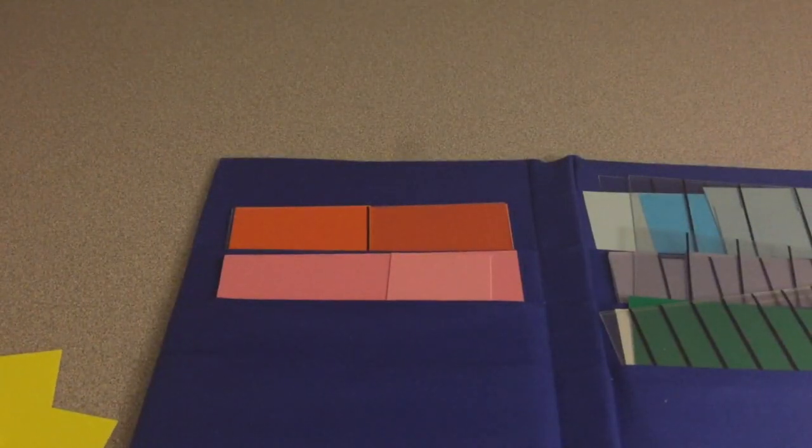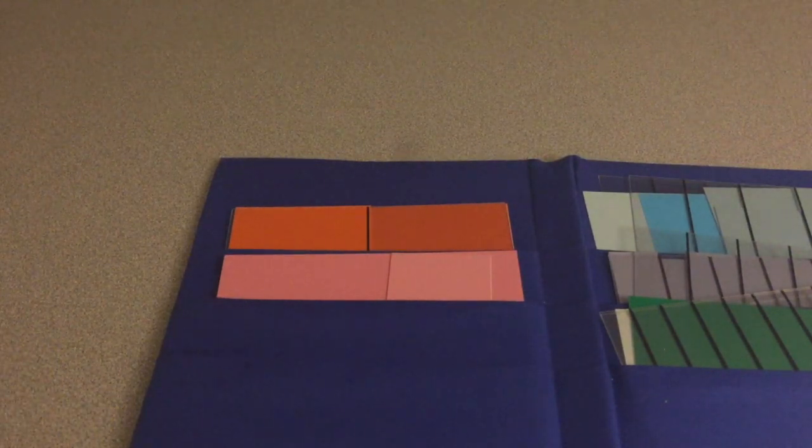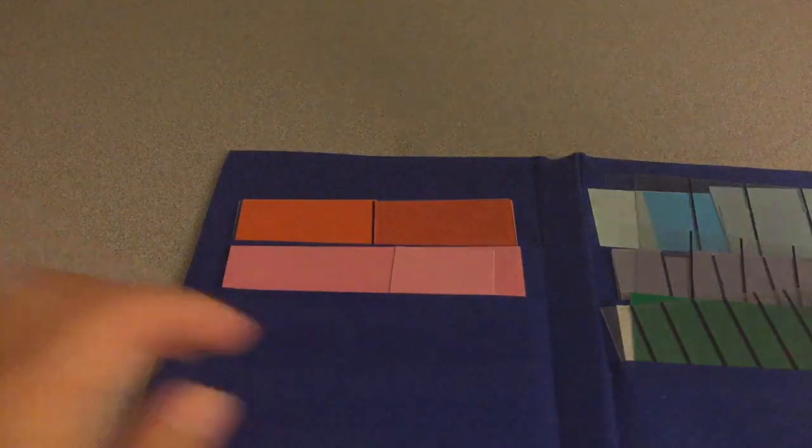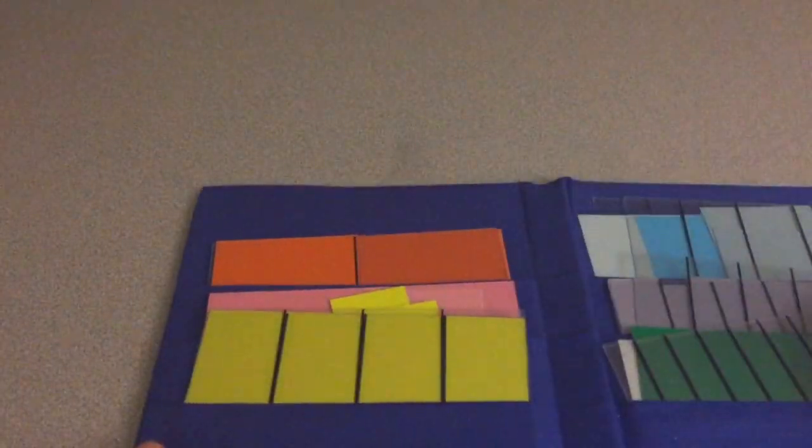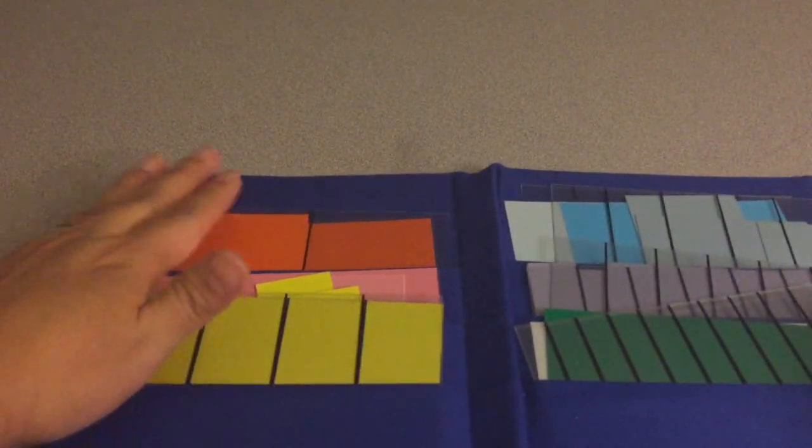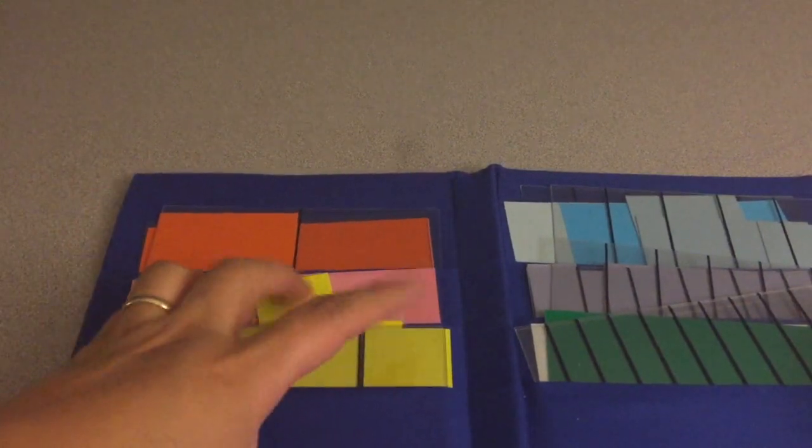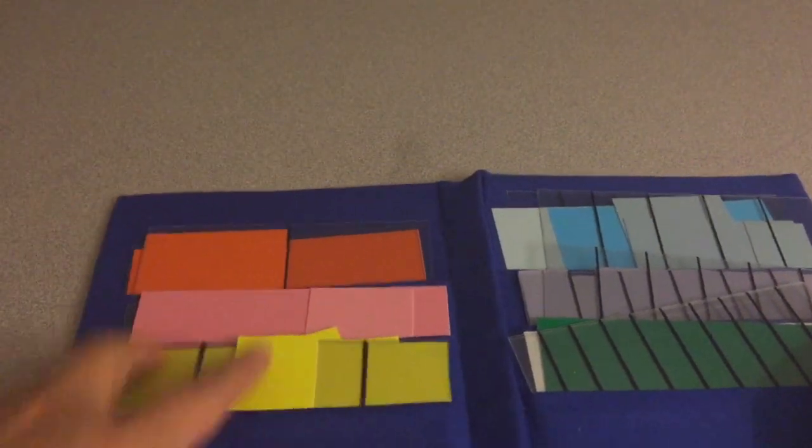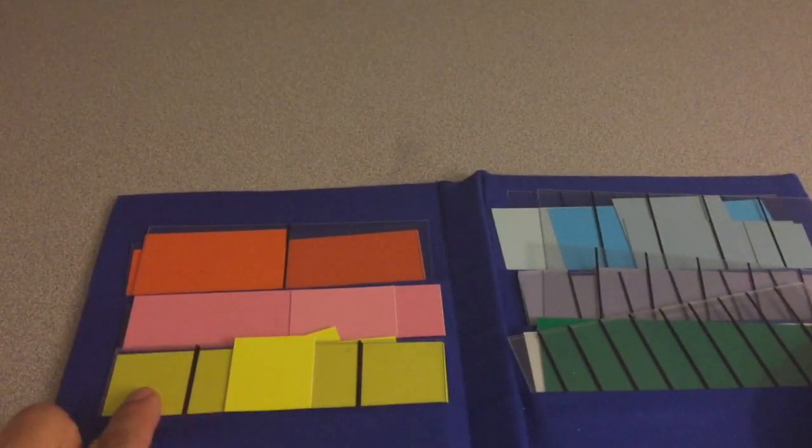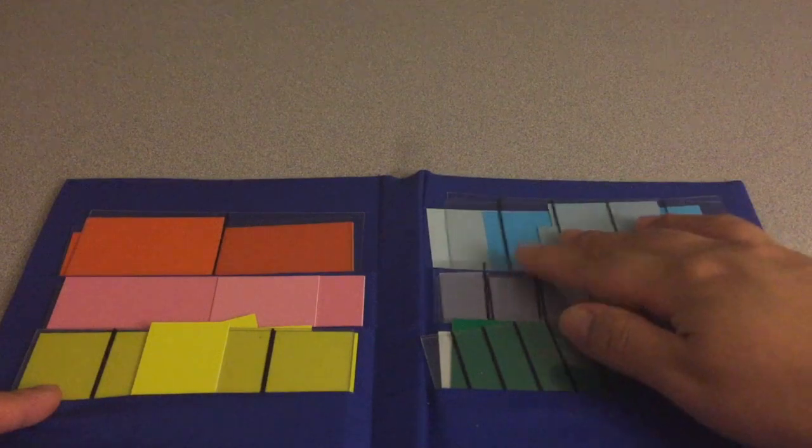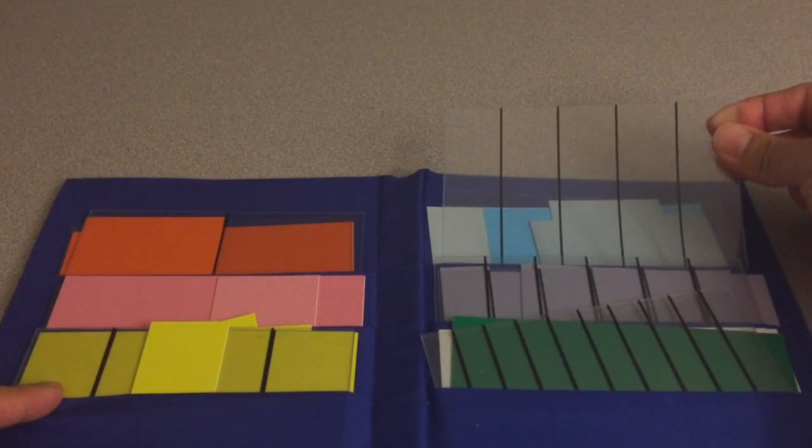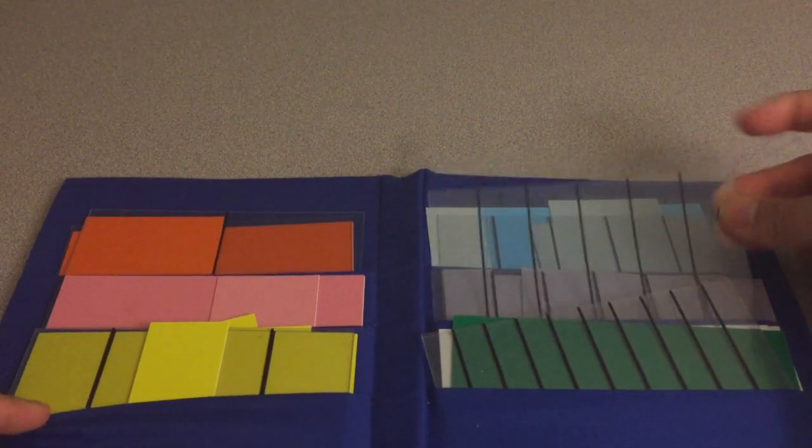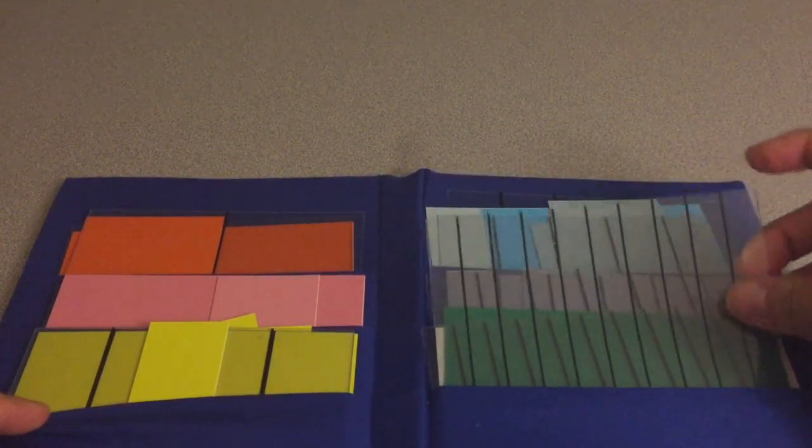So this is the halves, the pinks are the thirds, the fourths, this up here is the fifths, this is the sixths, and this one right here is the tenths.